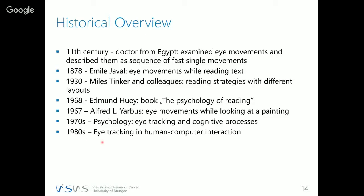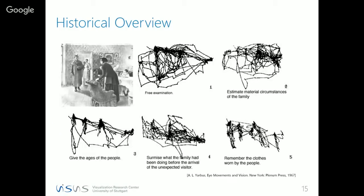Here are example images from Alfred Yarbus's seminal work. Using one stimulus — one painting — he asked for different types of tasks: free examination, remembering clothing, and so on. You see very different types of gaze behavior for the different tasks. This is very instrumental when we want to use eye tracking to understand visualization systems, because different tasks have an impact on eye movement patterns — and those are the patterns we want to analyze.